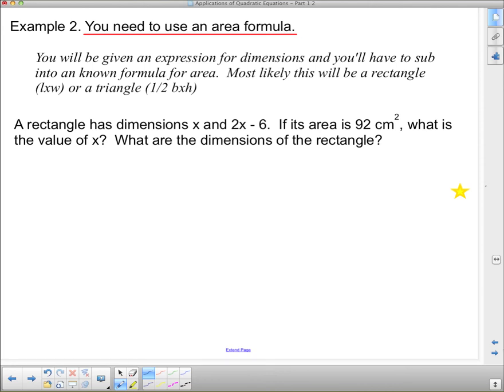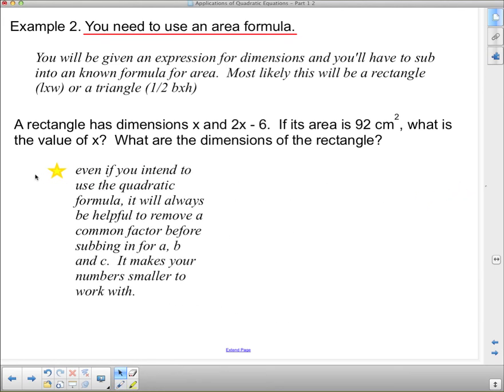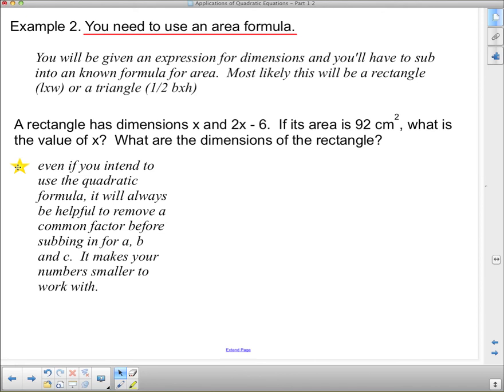A rectangle has dimensions x and 2x minus 6. If its area is 92 centimeters squared, what is the value of x and what are the dimensions of the rectangle? What does this here tell us? It says, even if you intend to use the quadratic formula, it would always be helpful to remove a common factor before subbing in for a, b, and c. It makes your numbers smaller to work with. So, that's a little bit of foreshadowing here. We're probably going to have to factor something out.